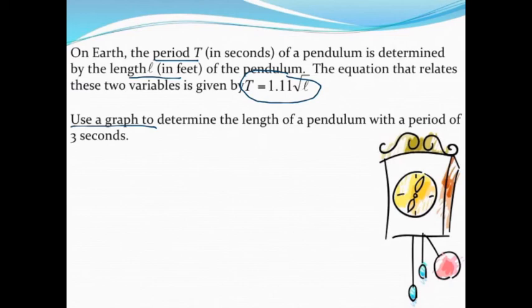The question is, how long is the pendulum if the period is 3 seconds, if it takes 3 seconds to swing back and forth? Because that 3 seconds is the period, that's the T value according to my equation, so I'm going to write this algebraically. 3 equals 1.11 times the square root of ℓ,